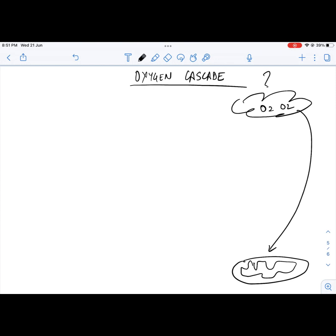The oxygen cascade describes the flow of oxygen from atmosphere to mitochondria, where it is consumed in aerobic respiration to release energy.